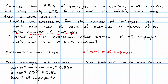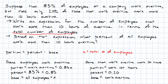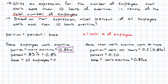In the part of the story where some of those that work overtime work more than 10 hours, now the base is the number that work overtime. The percent is 20%, and the portion is the number that work more than 10 hours. The base — the ones that work overtime — we found in the first part was 0.85x. So in the second part, the portion, the ones that work more than 10 hours, is 0.2 times 0.85x.